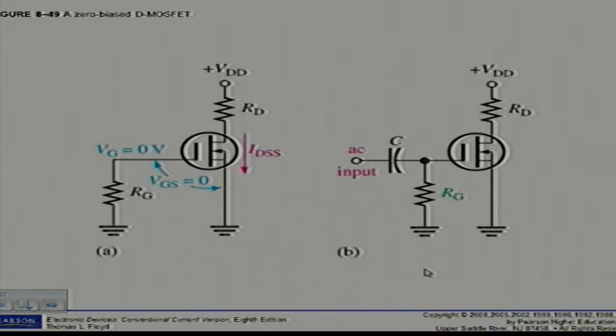Alright, that's the E MOSFET bias. Let's have a look at the D MOSFET bias at the bottom of page 406. Recall that the D MOSFETs can be operated with either positive or negative values of VGS. A simple bias method is to set VGS equal to 0, so that an AC signal at the gate varies the gate to source voltage above and below the zero volt bias point.